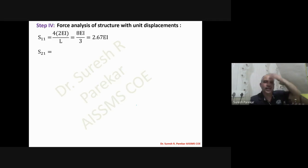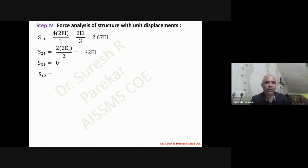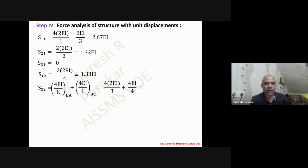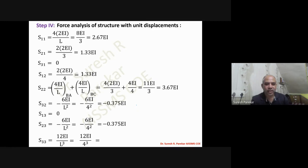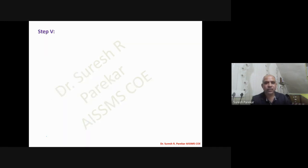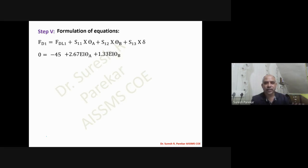The stiffness matrix is now assembled. S11 = 2.67EI, S21 = 1.33EI. The full 3×3 matrix includes S11, S12, S13 (first column from unit displacement at θA), S21, S22, S23 (from θB), and S31, S32, S33 (from Δ). The equations are: FD1 = FDL1 + S11·θA + S12·θB + S13·Δ.